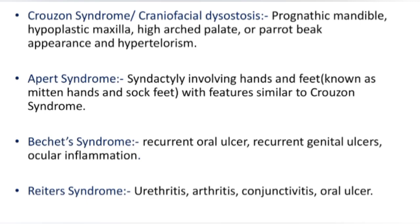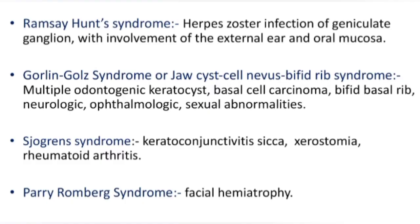Ramsay Hunt syndrome: herpes zoster infection of the geniculate ganglion, leading to facial paralysis of one side with involvement of the external ear and oral mucosa. Gorlin-Goltz syndrome, or jaw cyst basal cell nevus bifid rib syndrome: characterized by multiple odontogenic keratocysts, basal cell carcinoma, bifid rib, and neurologic, ophthalmologic, and sexual abnormalities.